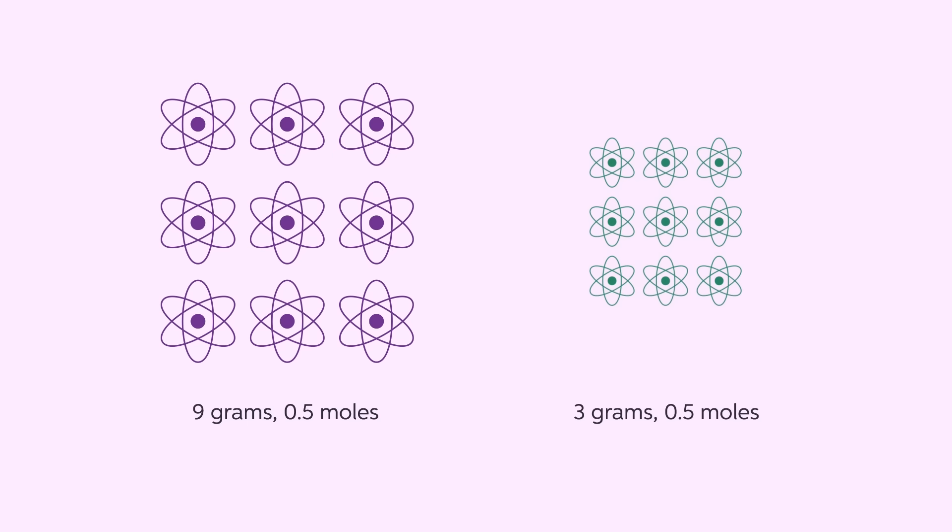Let's look at some examples. Here we have a half mole of element A at 9 grams of mass and a half mole of element B at 3 grams of mass. The larger atoms have more protons and neutrons so they weigh more in atomic mass. The number of atoms is determined by moles, not by grams.